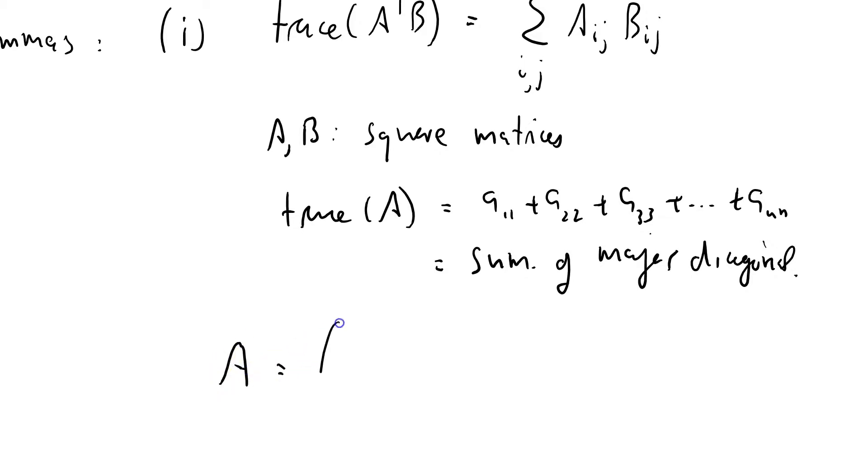So suppose that A is the matrix A11, A12, A21, A22, and B is the matrix B11, B12, B row 2, column 1, B row 2, column 2.